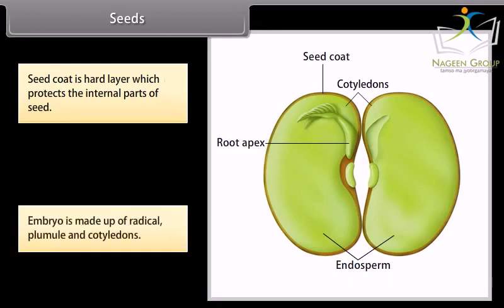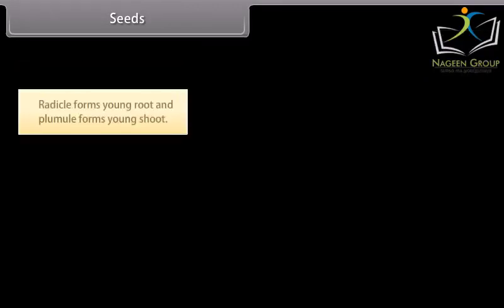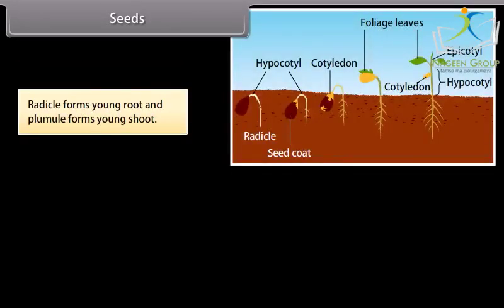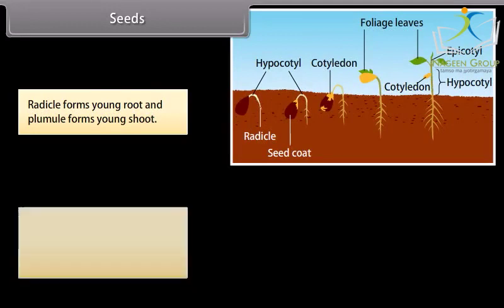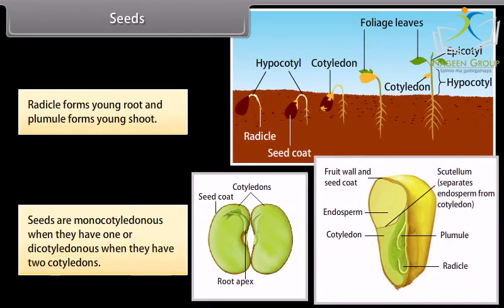Embryo is made up of radicle, plumule and cotyledons. Radicle forms young root and plumule forms young shoot. Seeds are monocotyledonous when they have one or dicotyledonous when they have two cotyledons.